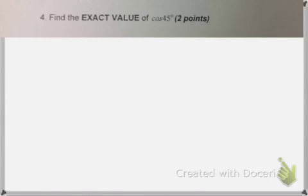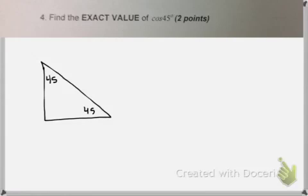Find the exact value of cosine 45. I know that I'm going to need to use my 45, 45, 90 right triangle for this. I always mark that up as x, x, x root 2.